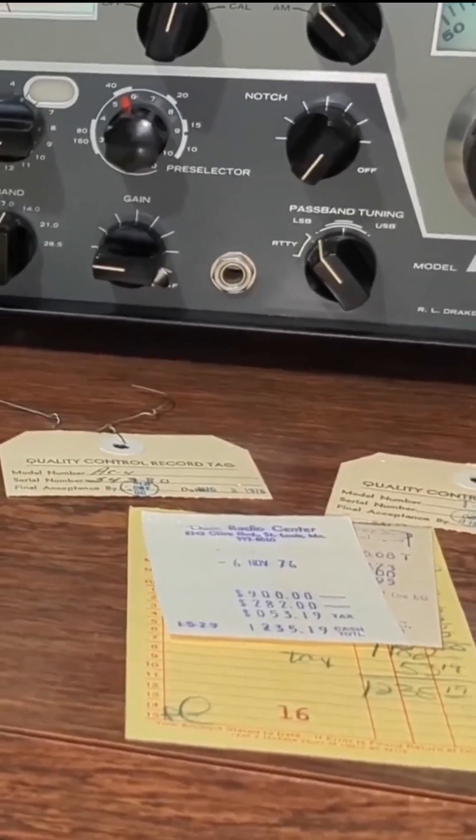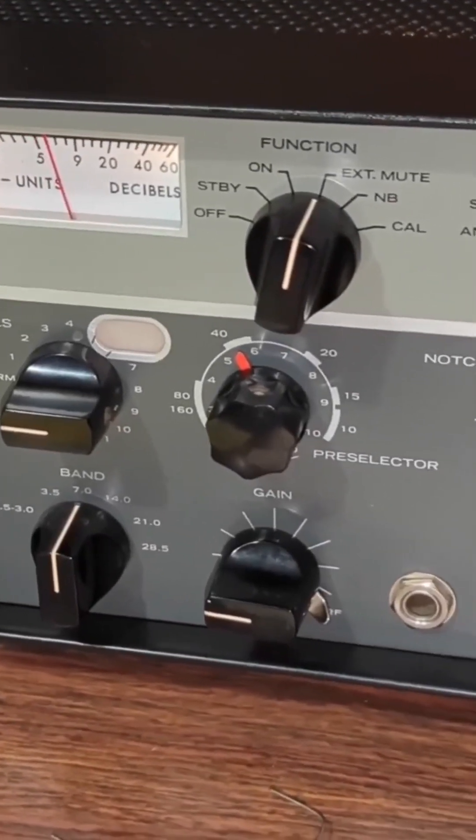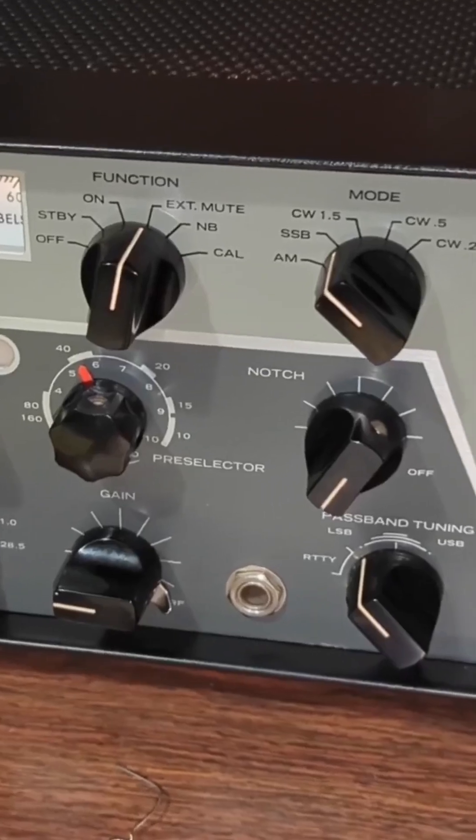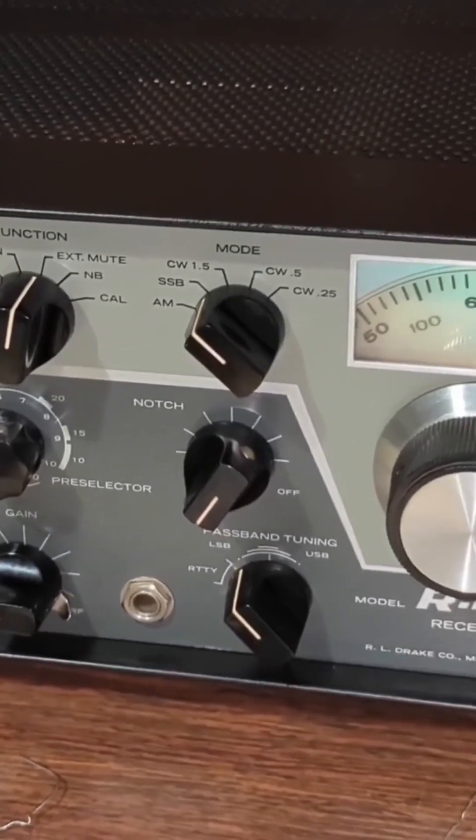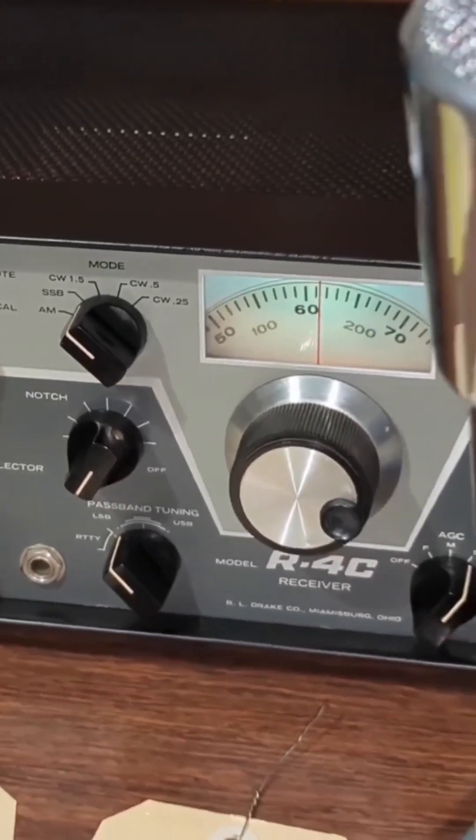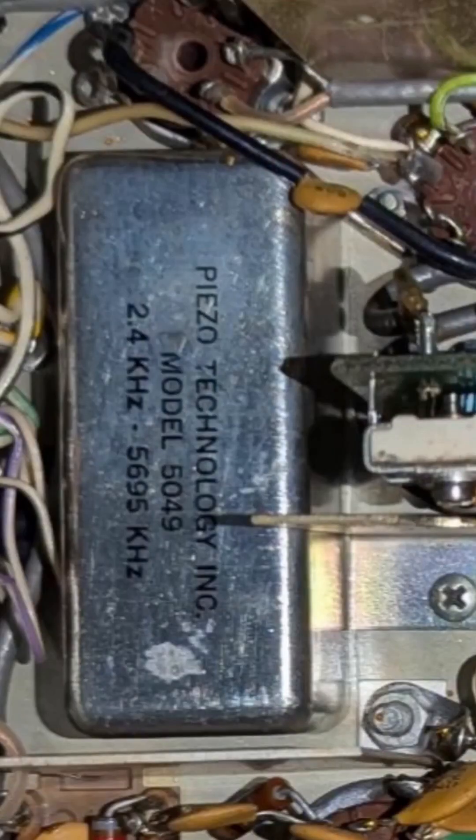The R4C receiver is Drake's masterpiece. A triple conversion superhet, with a solid-state permeability-tuned oscillator. A 6-pole crystal filter in the IF, upgradable to 8-pole if you really want to get serious.